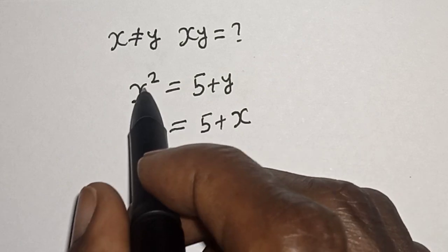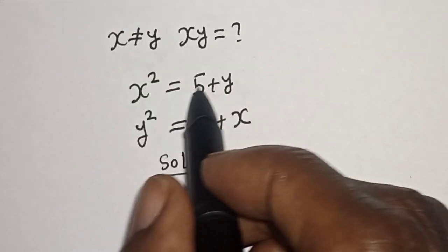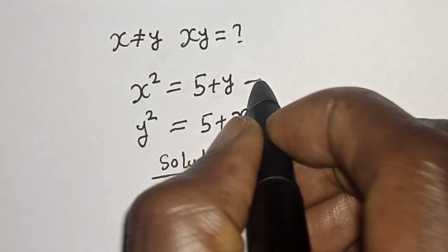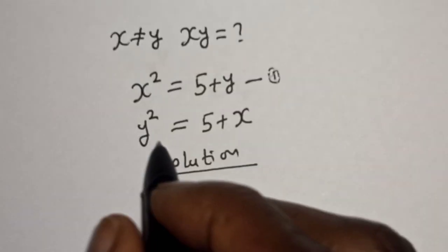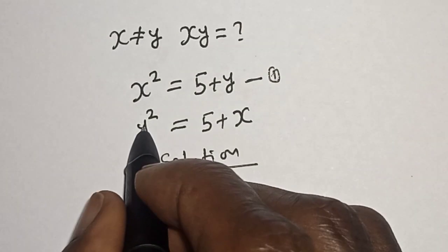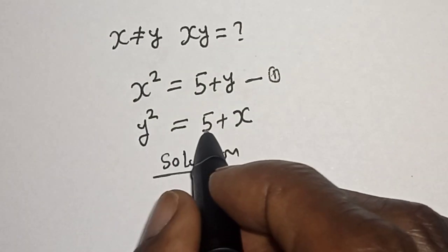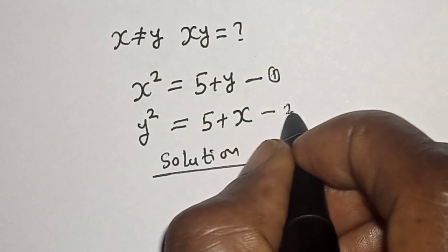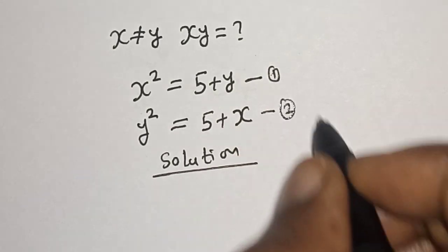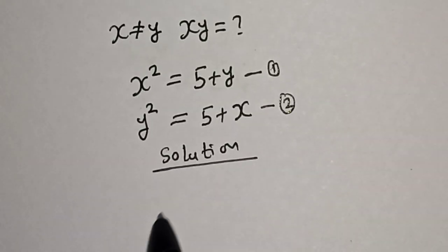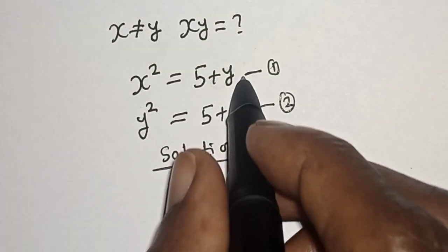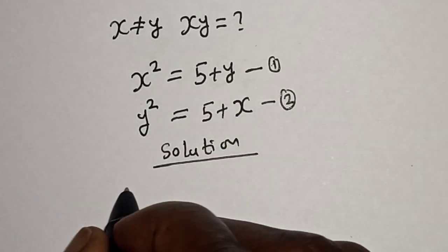This is s square is equal to 5 plus y — let's call this equation 1. Then y square is equal to 5 plus s — let's call this equation 2.